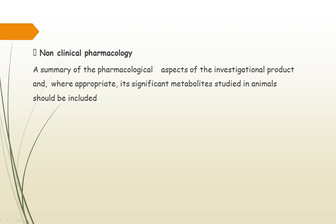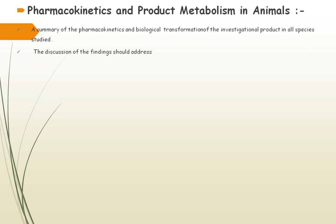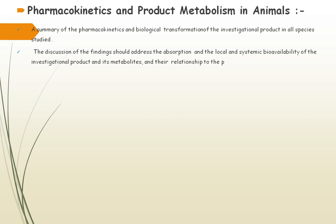The non-clinical pharmacology summary should include aspects of the investigational product and, where appropriate, its significant metabolites studied in animals. For pharmacokinetics and product metabolism in animals, a summary of pharmacokinetic and biological transformation — that is, metabolism — of the investigational product in all species studied must be recorded, whether rodent or non-rodent. The discussion of findings should address absorption, local and systemic bioavailability of the investigational product and its metabolites, and their relationship to pharmacological and toxicological findings in the animal species.